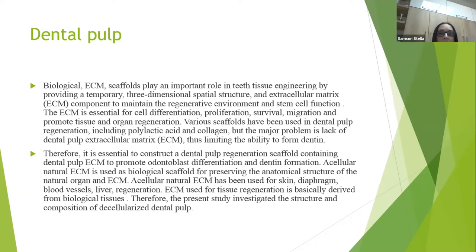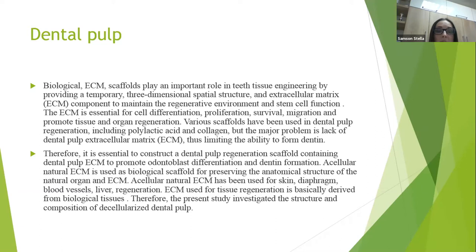Therefore, it is essential to construct a dental pulp regeneration scaffold containing dental pulp extracellular matrix to promote odontoblast differentiation and dentine formation. Acellular natural extracellular matrix is used as a biological scaffold for preserving the anatomical structure of a natural organ. Acellular natural extracellular matrix has been used for skin, diaphragm, blood vessel, and liver regeneration. Extracellular matrix used for tissue regeneration is basically derived from biological tissue.